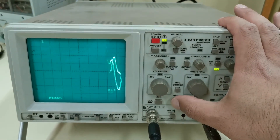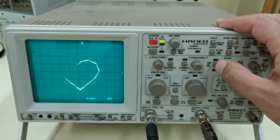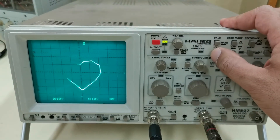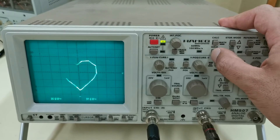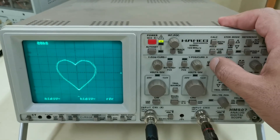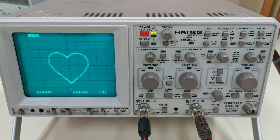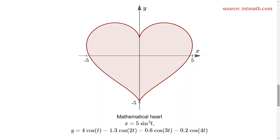Hi everyone. In today's video we're going to see how to draw a heart on the oscilloscope using an Arduino controller. We will base our work on Lissajous curves, therefore we need the parametric equation of a heart.